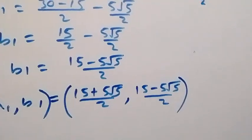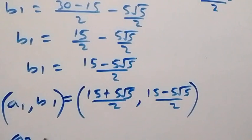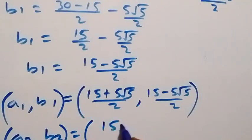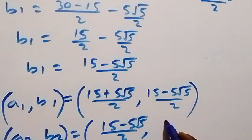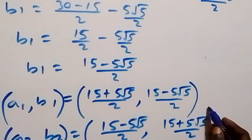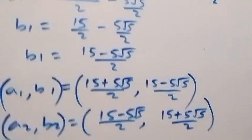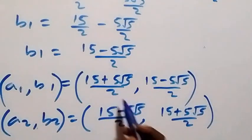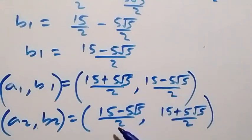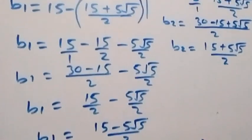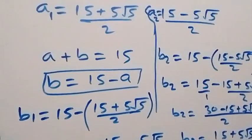The second set of solutions — a2 comma b2 — is: a2 equals fifteen minus five root five over two, and b2 equals fifteen plus five root five over two. Notice the value of a in the first solution is the same as the value of b in the second, and vice versa. Thank you for watching. Don't forget to subscribe for more videos, turn your notification bell on, and see you next class.